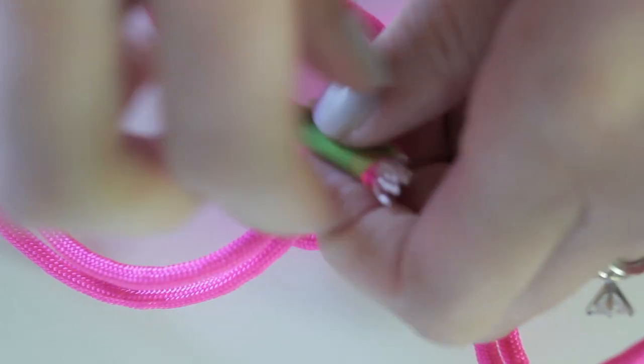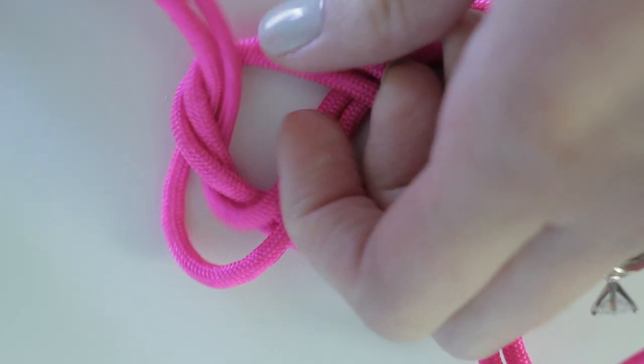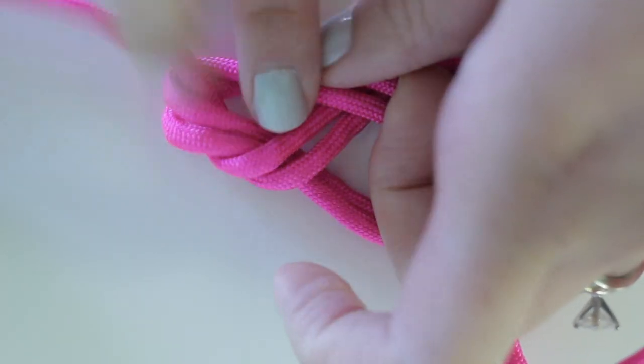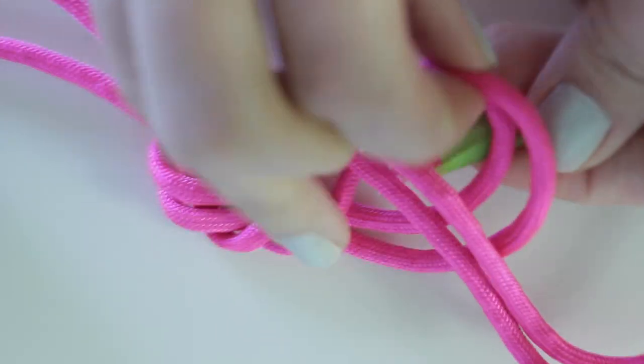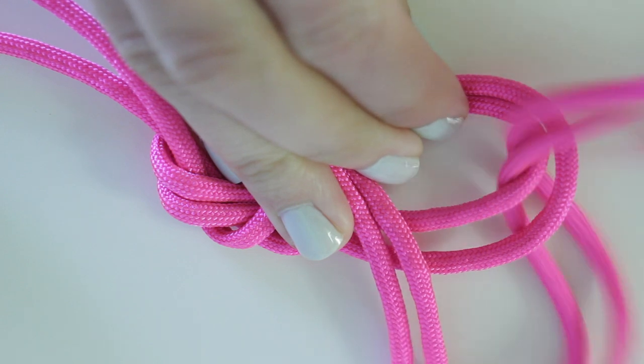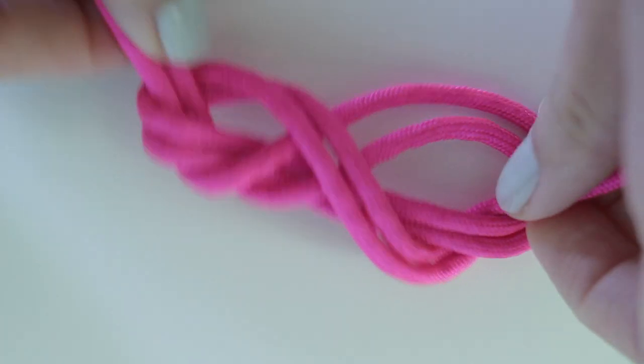Take one of the ends and place it through the loop, but don't pull it tight yet. You want to do the same thing to the other side first. Once you've done both sides, take the ends and pull it tight.